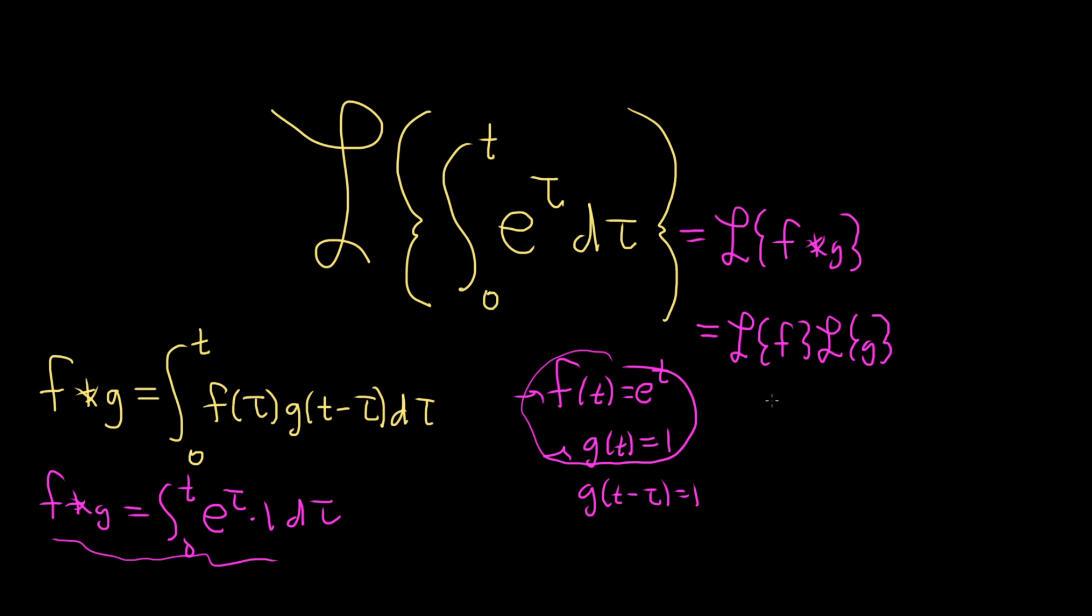So now we can just find the Laplace of each of these. So we have the Laplace of e to the t times the Laplace of 1. So again, you basically just have to identify which functions are involved in the convolution, and then you can go through this route here.